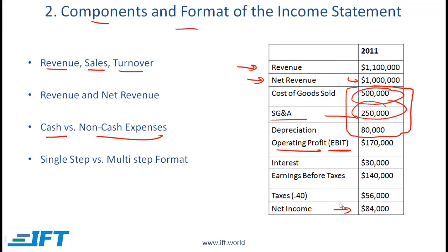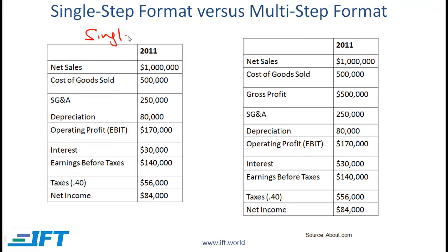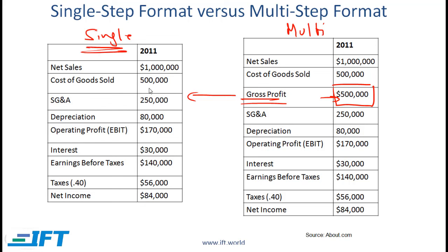This is a simple income statement. Single-step versus multi-step format: on the left is a single-step format and on the right is a multi-step format. The subtle difference is that in a multi-step format, we subtract cost of goods sold and arrive at a gross profit number — in this case, half a million. In a single-step format, the gross profit line is missing, though it can easily be calculated by subtracting 500,000 from 1 million.